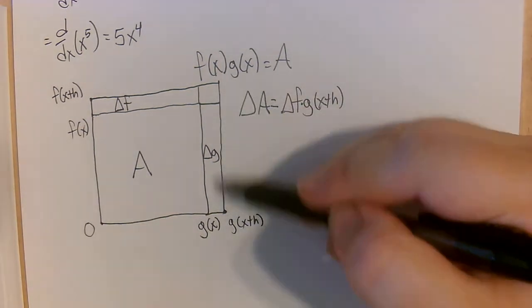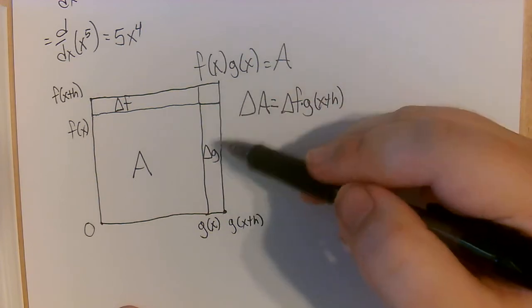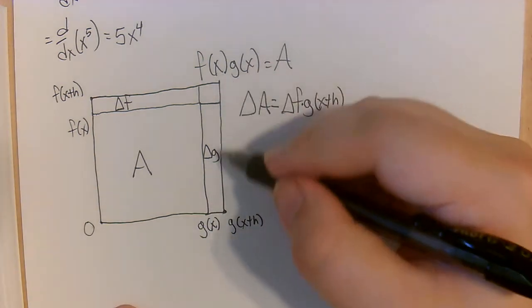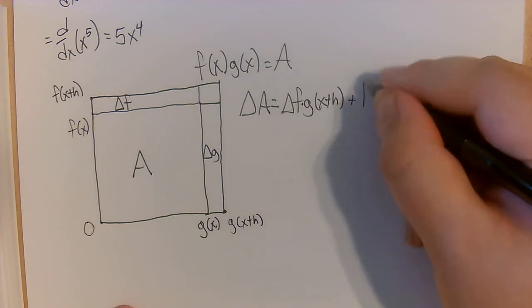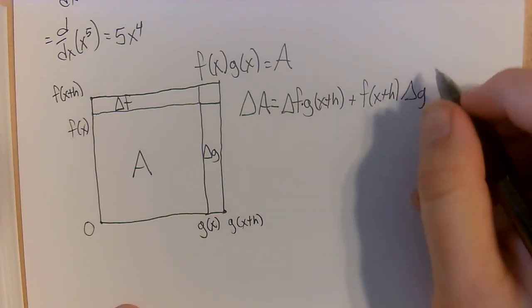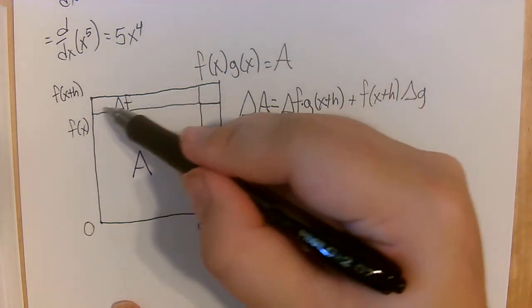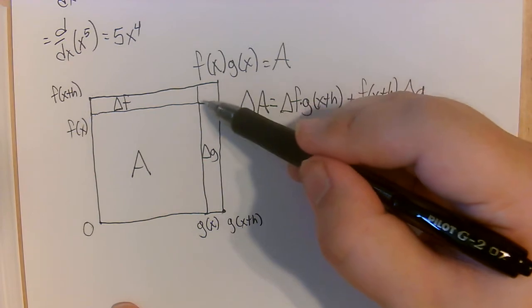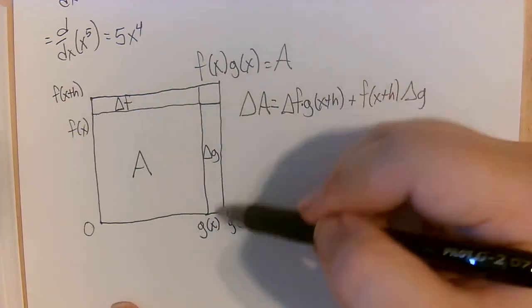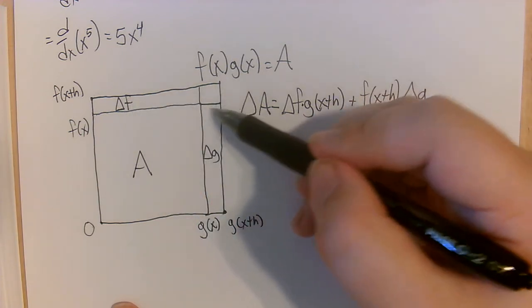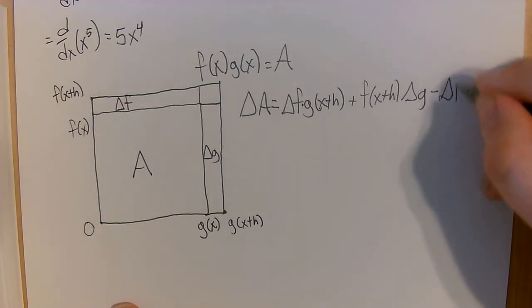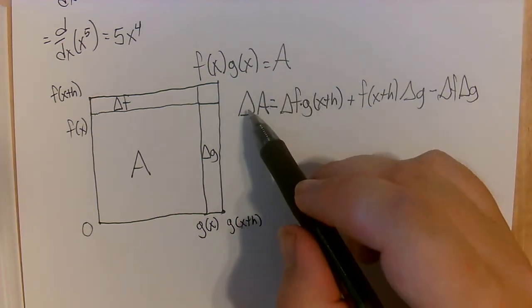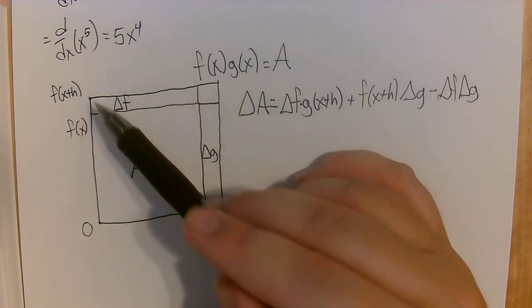My goal is to understand what the change in area, delta a, is going to be. The area changed by two rectangles: one with height delta f and length g of x plus h, giving delta f times g of x plus h. The other rectangle has width delta g and length f of x plus h, giving f of x plus h times delta g. But we accidentally double-counted the small corner box, so I need to subtract delta f times delta g to compensate.